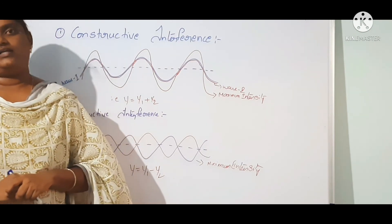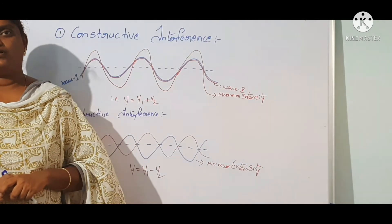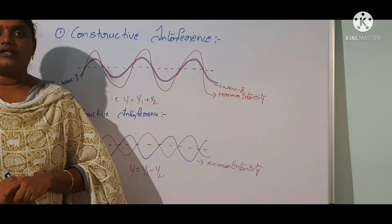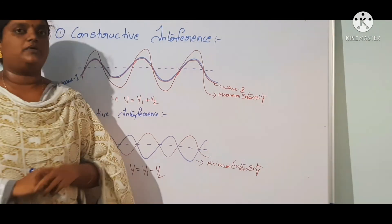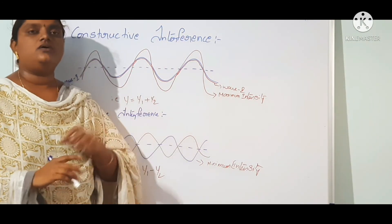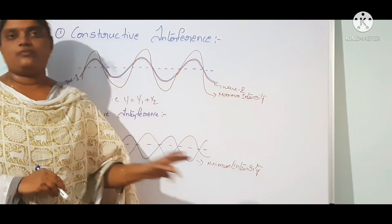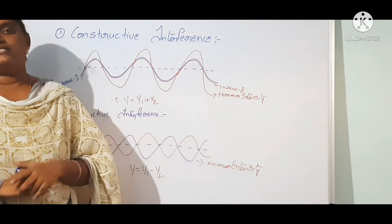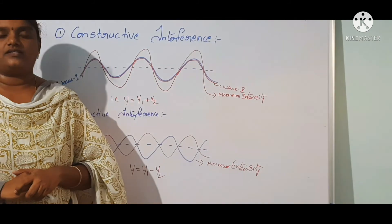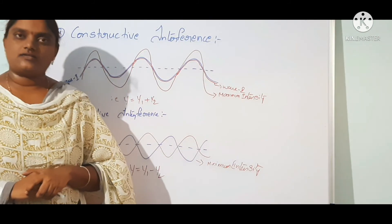To summarize, interference of light has two types: constructive interference, which produces maximum intensity and bright fringes, and destructive interference, which produces minimum intensity and dark fringes.